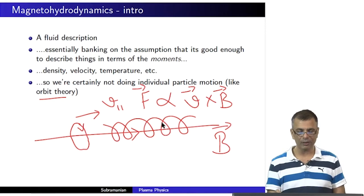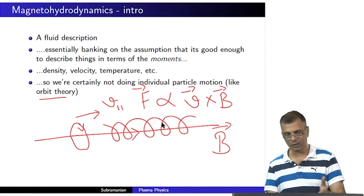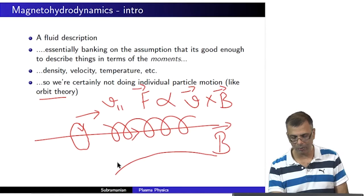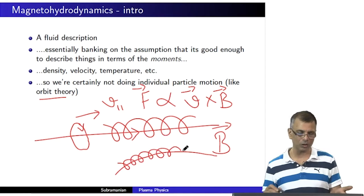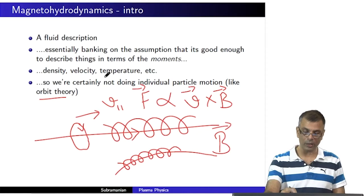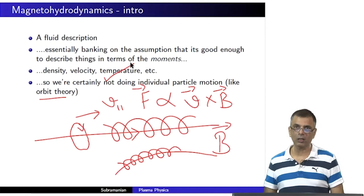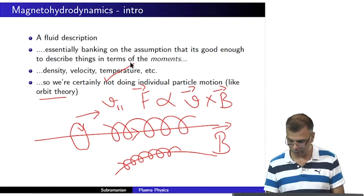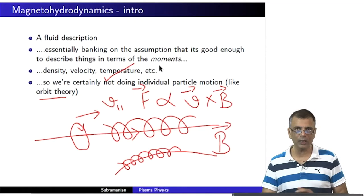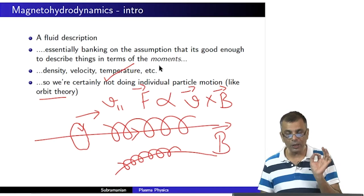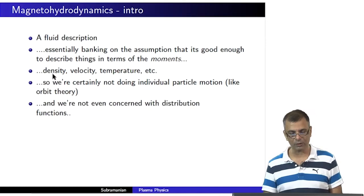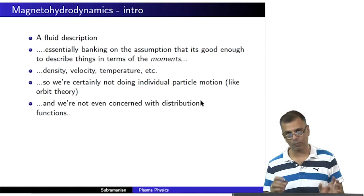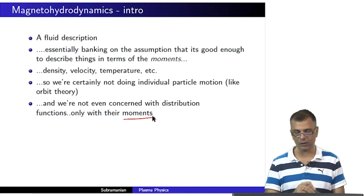There is an elaborate theory describing these orbits — for instance, what would happen if the magnetic field were curved. But we are not doing orbit theory here. We are doing fluids. We are not looking at individual particles. We are not even doing distribution functions of particles. We are concentrating only on the moments of the distribution function: density, velocity, temperature, and so on.